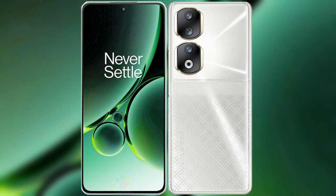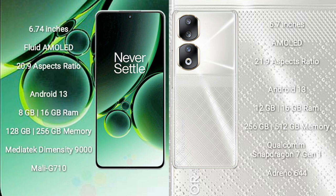I will compare the new OnePlus Nord 3 with Honor 90. OnePlus Nord 3 comes with a 6.74-inch flat AMOLED display with a 20:9 aspect ratio. Honor 90 comes with a 6.7-inch AMOLED display with a 21:9 aspect ratio.